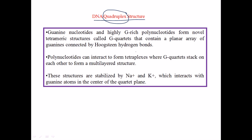That's why to make this quadruplex structure, the first thing we need is the presence of a large amount of guanine-rich polynucleotide sequences in a particular stretch of DNA. These polynucleotides can then interact to form tetraplex structures.